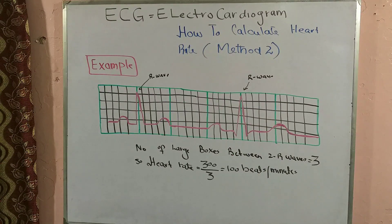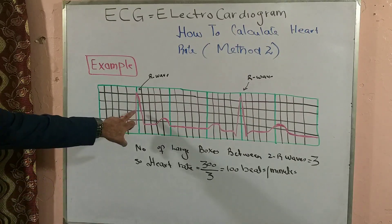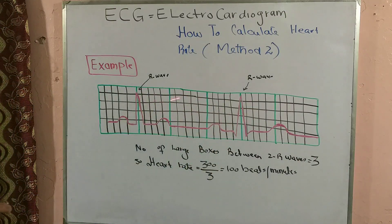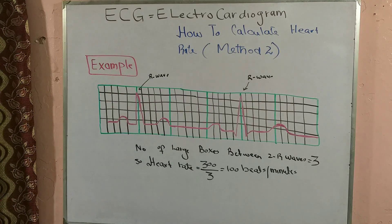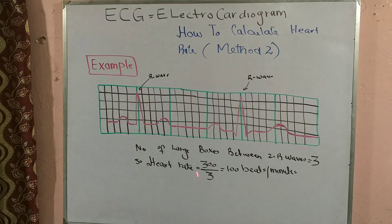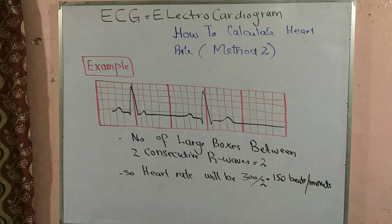Let's take an ECG strip as an example. Here we identify the first R wave and the next consecutive R wave. Between these two R waves there are one, two, and three large boxes, separated by the thick green lines. Since we have 3 large boxes, we divide 300 by 3, which gives us 100 beats per minute.